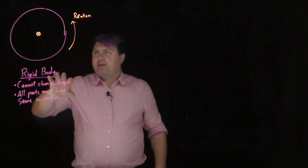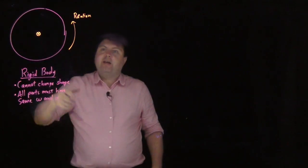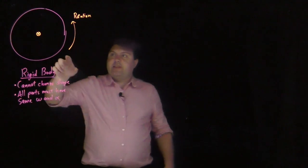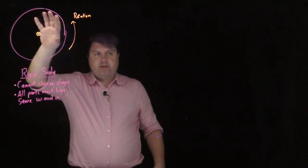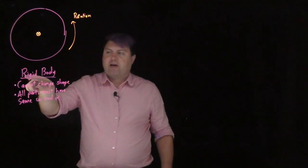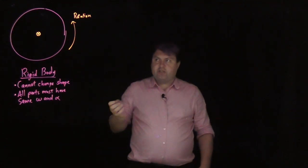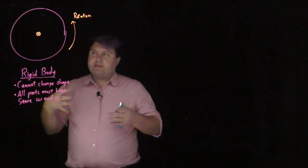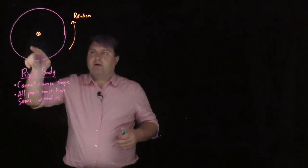Welcome. So we have here a disk that is spinning, and this is somewhat new for us in that we have objects with dimension now. In order to make our lives easier, we are going to say that these objects have to have rigid bodies. They can't change shape.